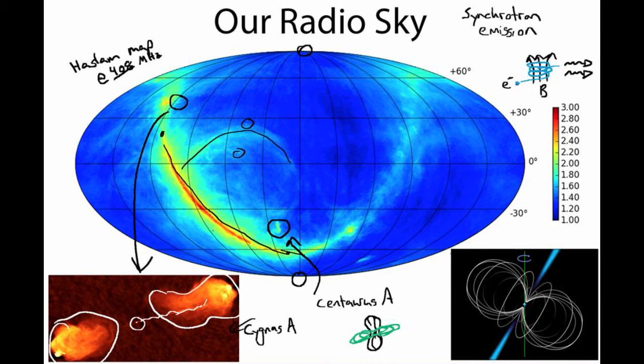So in radio, we can see very well our own galaxy. We can see other nearby galaxies as these big outflows, and we can see very far away galaxies as these points.